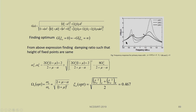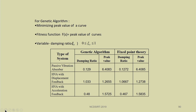There are many methods — one can also use a genetic algorithm minimizing the peak value as a fitness function, with 0 < ζₐ < 1 as a variable. In the genetic algorithm study: for a passive vibration absorber the damping ratio was found to be 0.129, for a hybrid vibration absorber (HVA) with displacement feedback the damping ratio is 1.033, and for HVA with acceleration feedback the damping ratio is 0.48.